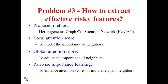The third problem is: how to extract effective risky features? We propose a novel heterogeneous graph co-attention network. Our model aims to make use of collaborative metapaths to learn effective risky features by a well-designed co-attention mechanism. First, the local attention score models the similarity-based importance of neighbors by considering holistic metapath context. Second, the global attention score adjusts the importance of neighbors by fusing local attention scores under different metapaths. Third, we propose a pairwise importance learning method, which optimizes a margin loss to increase the attention scores of multi-metapath neighbors.